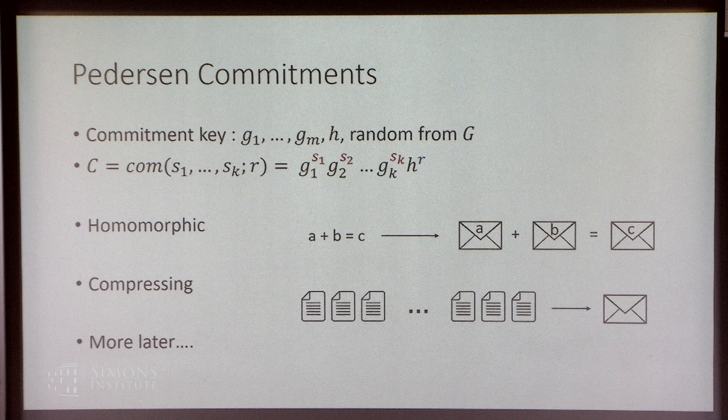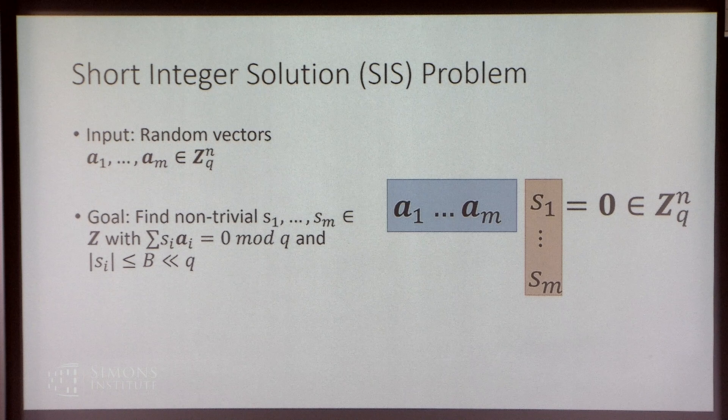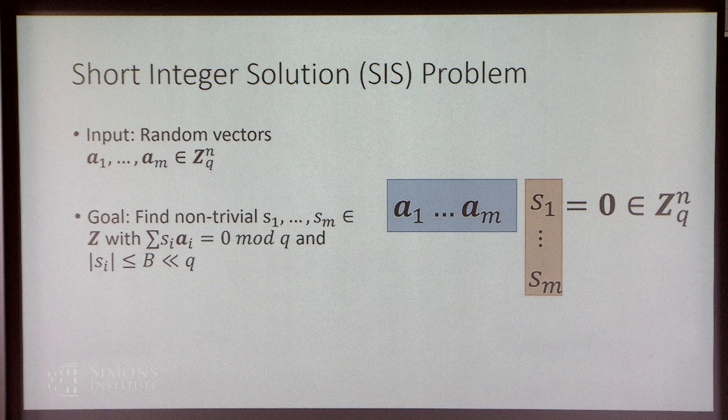What if we want to build a lattice-based commitment scheme? For that, we could use something like the SIS problem — the short integer solution problem. The input is a collection of random vectors a_i from some finite ring — vectors of length n. You solve the SIS problem by finding a non-trivial linear combination with coefficients s_i equal to 0 mod q, where all s_i norms are bounded above by some integer b, which you can think of as being much less than q. This is supposed to be difficult for quantum computers to solve.